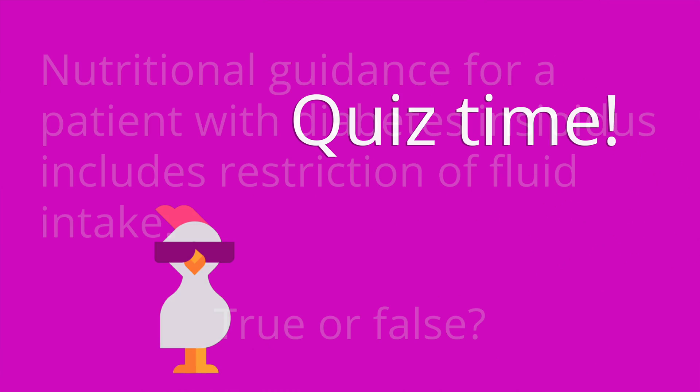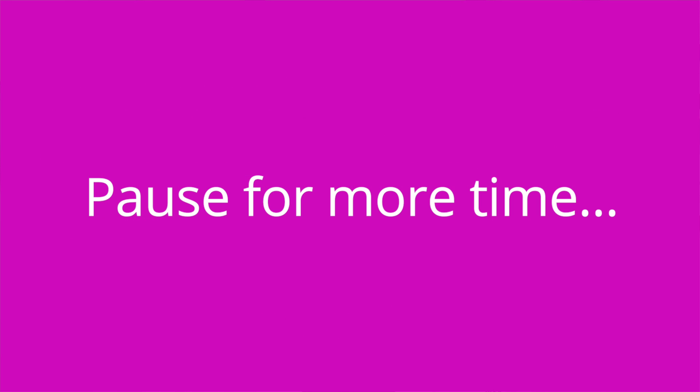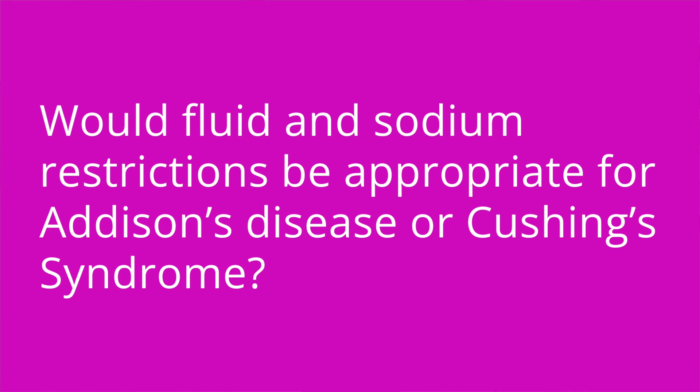It's quiz time, and I have four questions for you. Question number one: nutritional guidance for a patient with diabetes insipidus includes restriction of fluid intake — true or false? The answer is false. Diabetes insipidus causes water loss, so patients will be advised to increase their intake of fluids. Question number two: would fluid and sodium restrictions be appropriate for Addison's disease or Cushing syndrome? The answer is Cushing syndrome. Addison's disease can cause dehydration and hyponatremia, so fluid and sodium restrictions would not be appropriate.